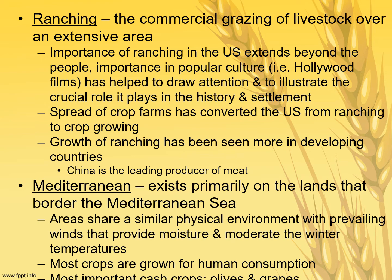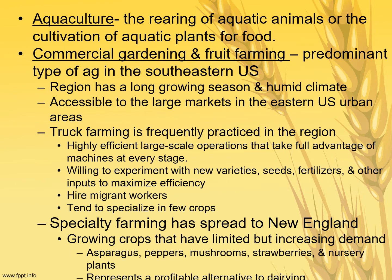Mediterranean agriculture is found in those very specific areas with a Mediterranean climate — around the Mediterranean Sea, the coast of California, southern tip of South Africa, coast of Chile, and south-central coast of Australia. Winds provide moisture and moderate winter temperatures. Most crops are grown for human consumption, with olives and grapes being most important. The most important product of Mediterranean agriculture is wine — most of the world's wine comes from these very few regions. Aquaculture is the rearing of aquatic animals or cultivation of aquatic plants for food.